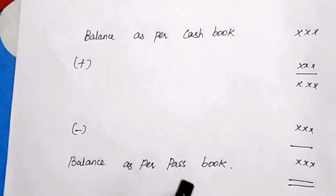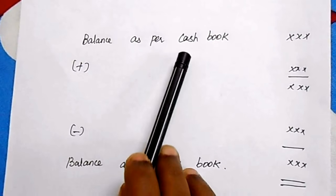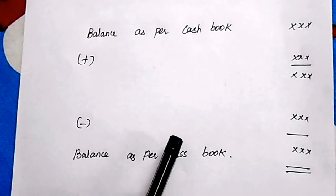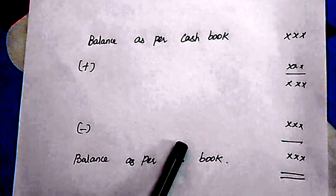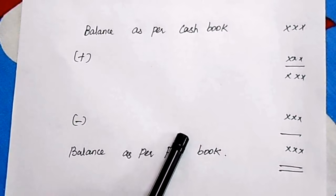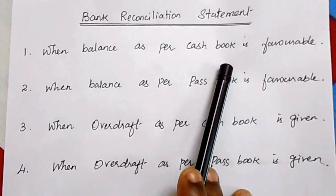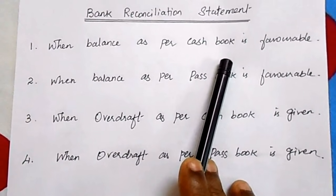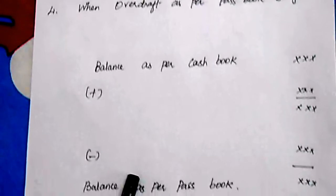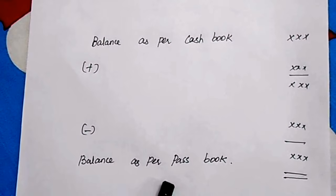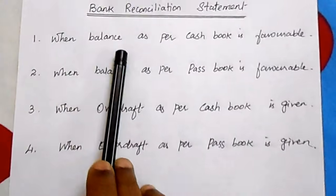In the previous video I explained the meaning of cash book, pass book, favorable and unfavorable balance, basic journal entries, and how to prepare BRS when both cash book and pass book are given — in that situation you compare the two to find the causes of difference. But in these four situations, the causes are already listed in the problem, so you only need to add or subtract items to find the balance.